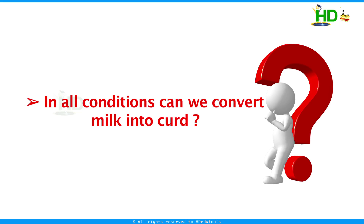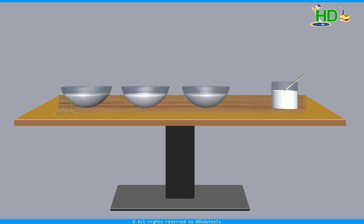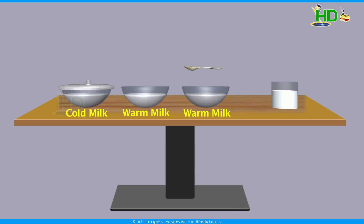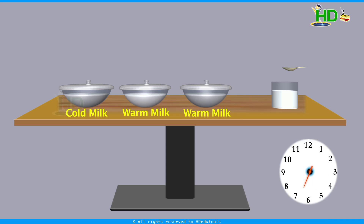Now the question is: can we convert milk into curd under all conditions, or are particular conditions required? To test this, take three bowls — bowl one, bowl two, and bowl three. Bowl one contains cold milk, bowls two and three contain warm milk. Add a curd sample to bowl one and bowl two, that is to the cold milk and the warm milk, and don't add anything to bowl three. After 6-8 hours, observe the results.